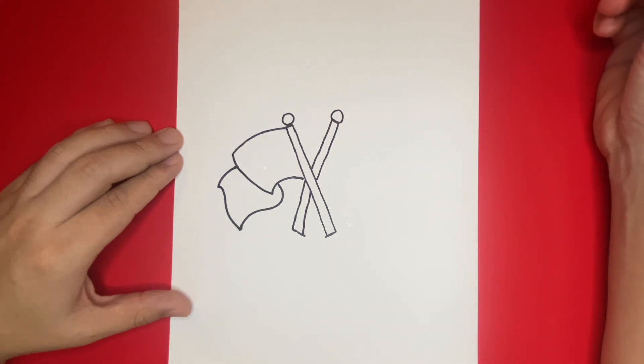Now, attached to the rectangular shape that we just drew, let's go ahead and draw the outline of the right flag.